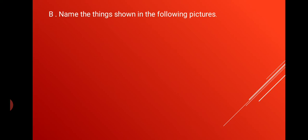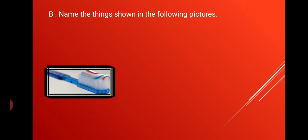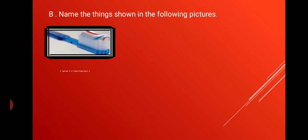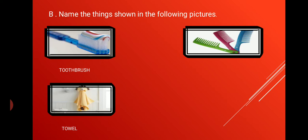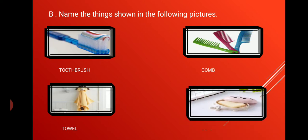Now, B is name the things shown in the following pictures. Few pictures will be shown and you have to write the names of the objects. First is toothbrush. Second is towel. Third is comb. And last is soap.